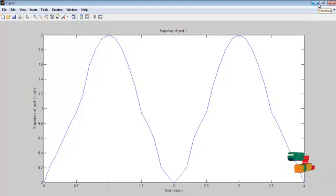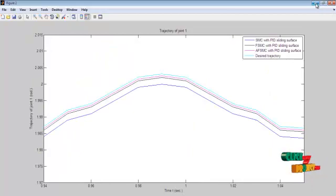The first one is the trajectory of the joint one waveform. This is drawn between trajectory of joint and time. Next one is the trajectory of time for various processes.